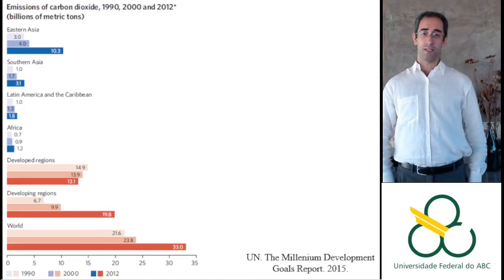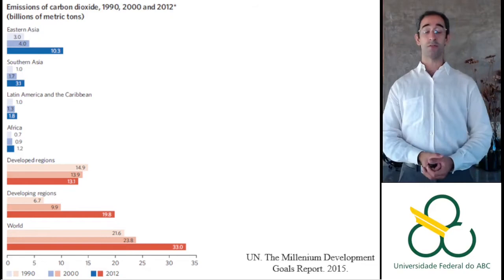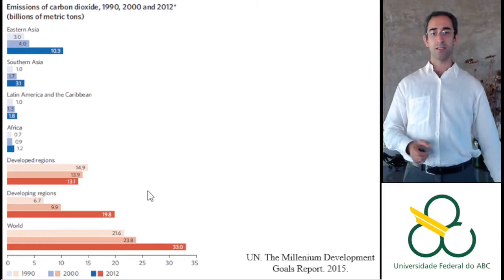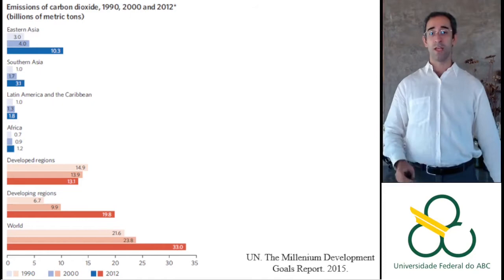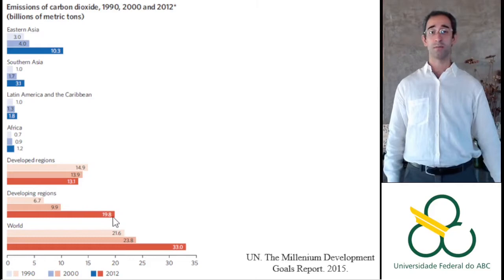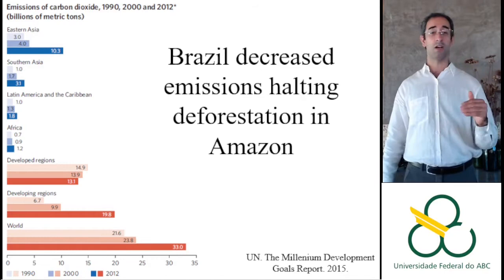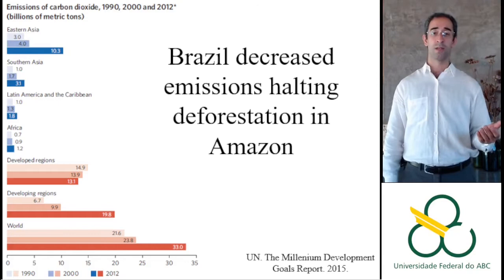One environmental goal concerned carbon dioxide emissions causing global warming. The graphs show that worldwide, emissions increased over a long time — they did not improve, they got worse — especially because of developing regions. Developed countries decreased slightly, but developing regions increased, particularly Eastern Asia and somewhat Southern Asia. Brazil specifically decreased emissions because of reduced deforestation in the Amazon, which was the main cause of emissions for Brazil. So Brazil went in a different direction from the rest of the world.